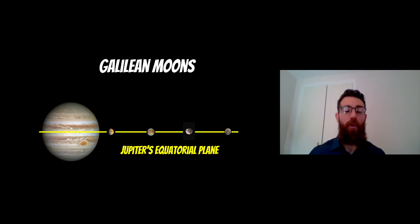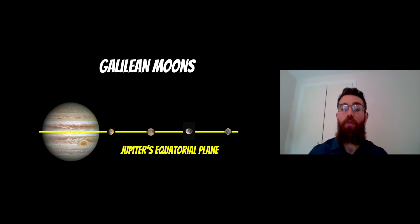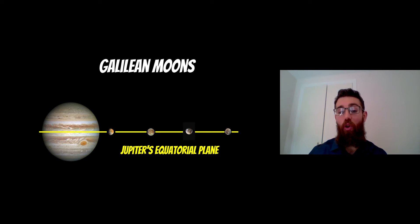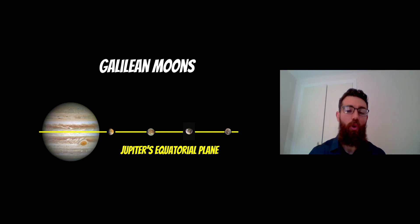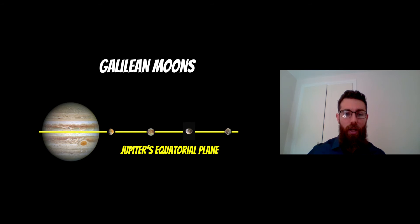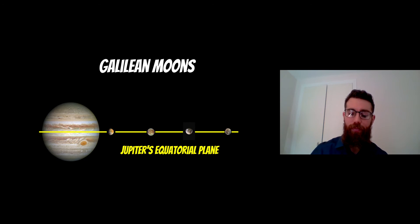If a planet is rotating, you think about where the equator is — the moons are going to be orbiting in that same plane. A good example is Jupiter's Galilean moons. The four Galilean moons are regular moons and they are orbiting approximately in the same orbital plane as the equatorial plane. It's not exact; there are slight inclinations, but they are very close to it.